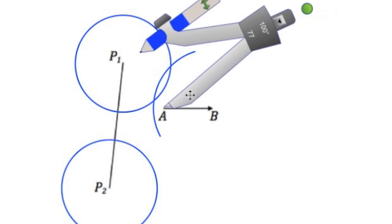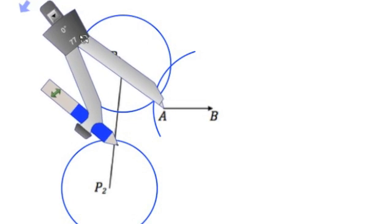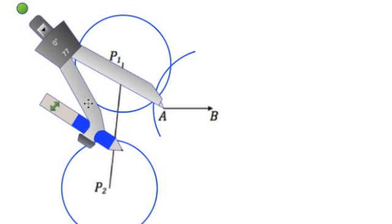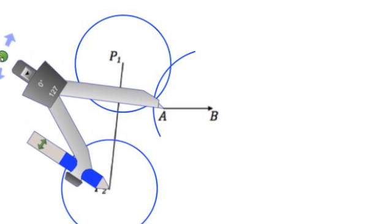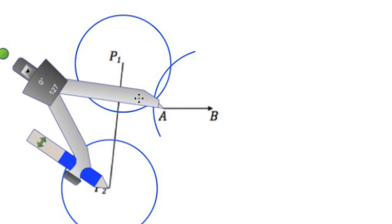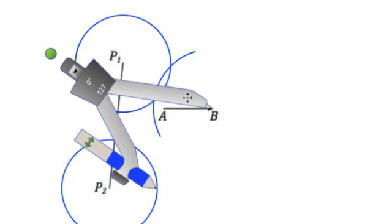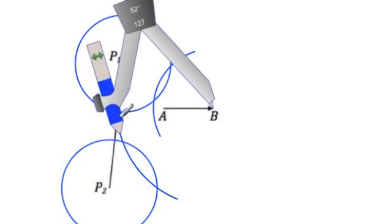We're going to repeat this process with all other points. Put the compass point at the beginning of the vector and stretch it to the other point on the object. Then copy that at the end of the vector and swing an arc to intersect the circle.